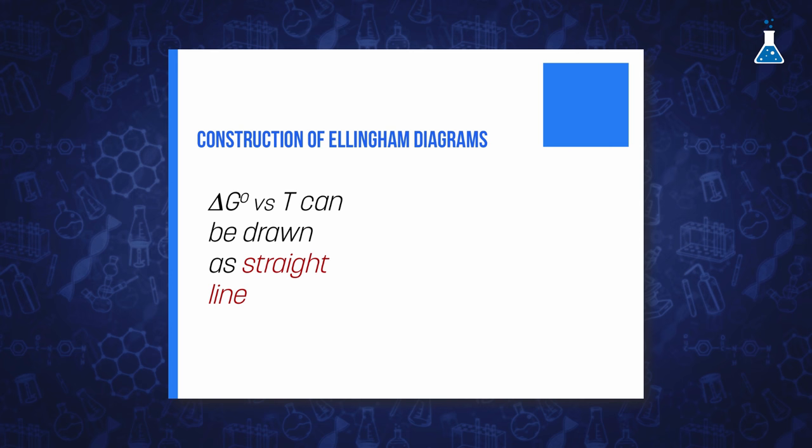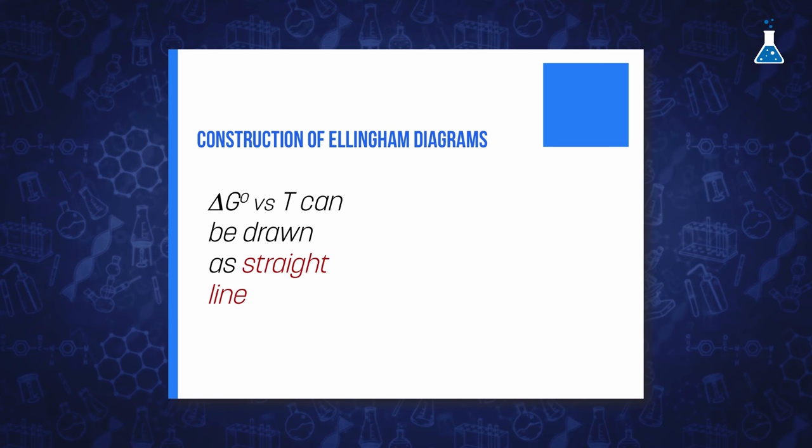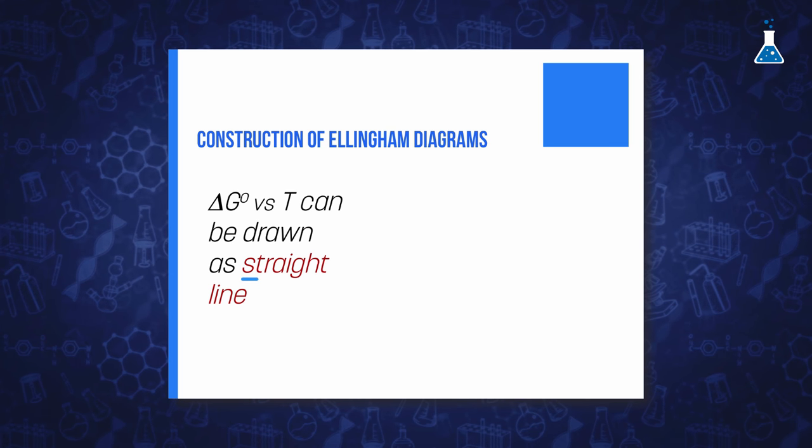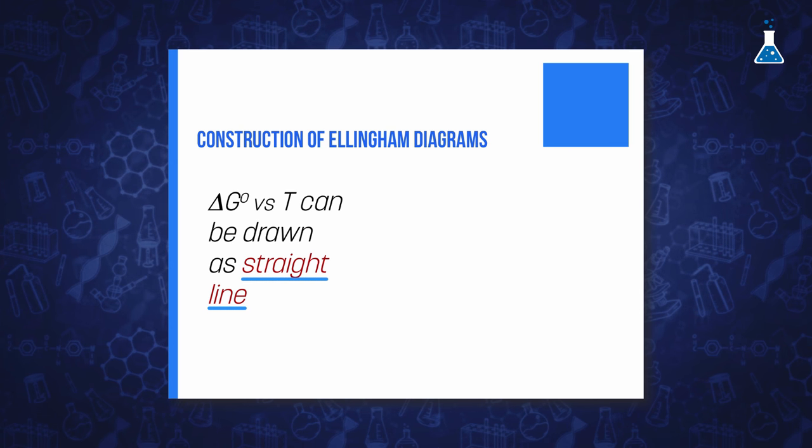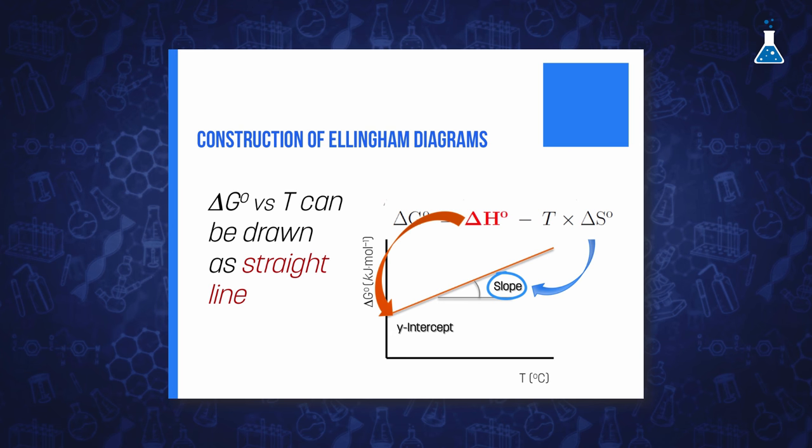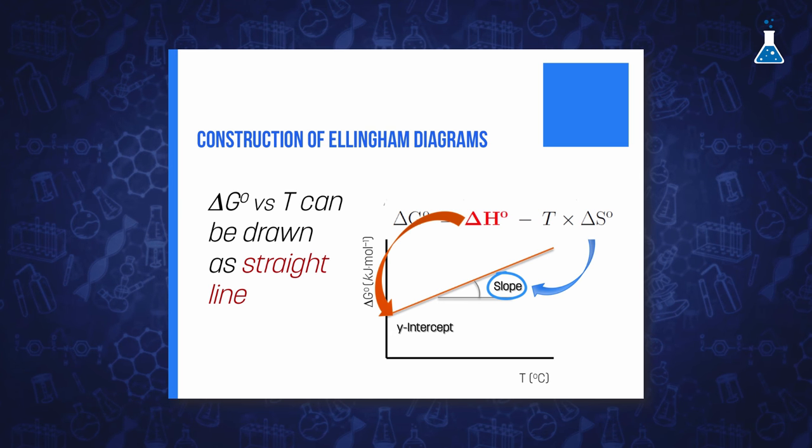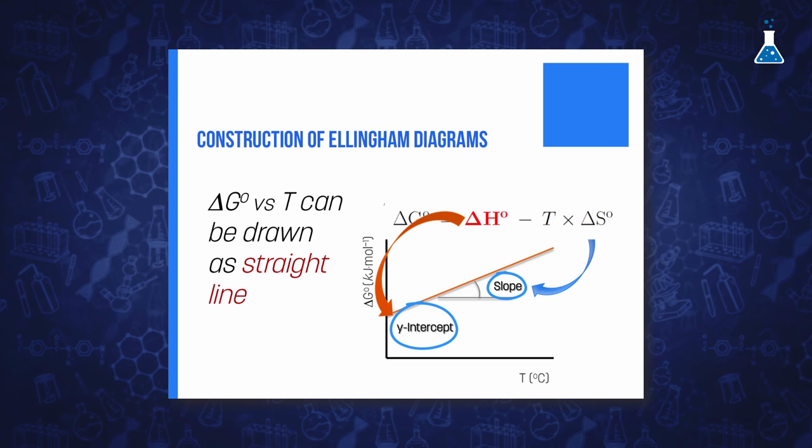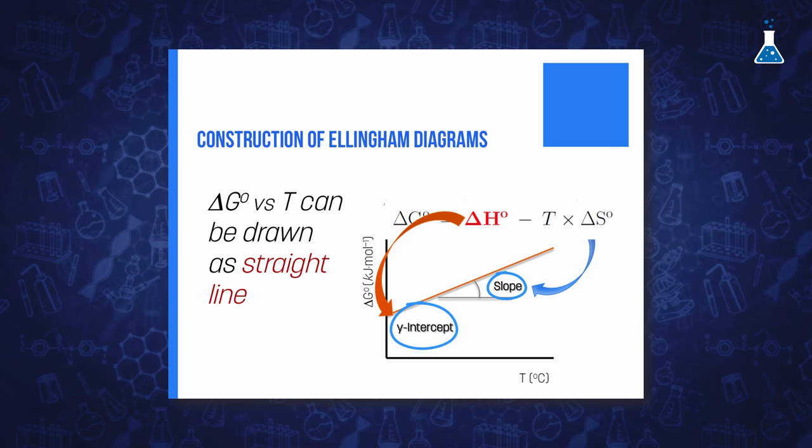The representation of the free energy versus temperature can be drawn as a series of straight lines where the variation of entropy with opposite sign will be the slope of the line and the variation of enthalpy the y-intercept according to the following well-known relationship.